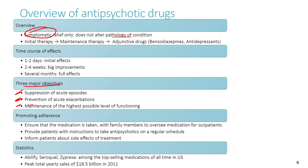To meet these objectives, treatment has three phases: initial therapy to treat acute manic episodes, maintenance therapy to prevent future acute episodes, and adjunctive drugs to ensure highest possible functioning. In terms of time course: initial effects take one to two days, big improvements take two to four weeks, and full effects are seen after several months.